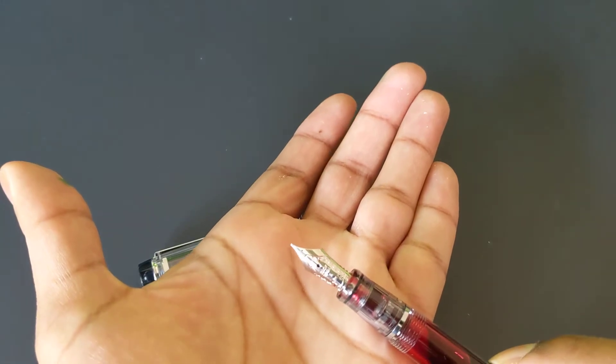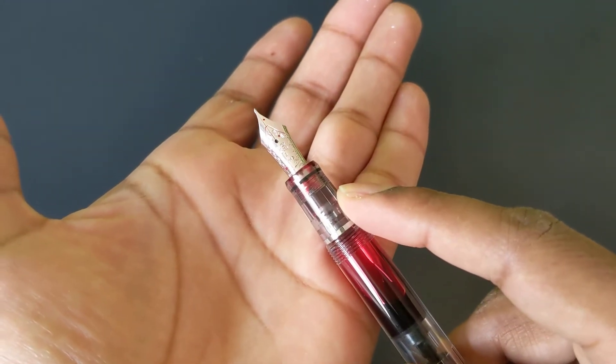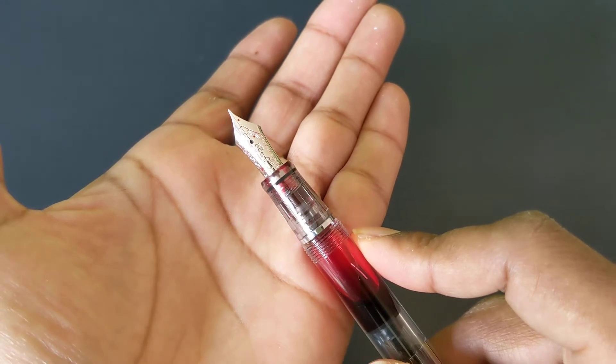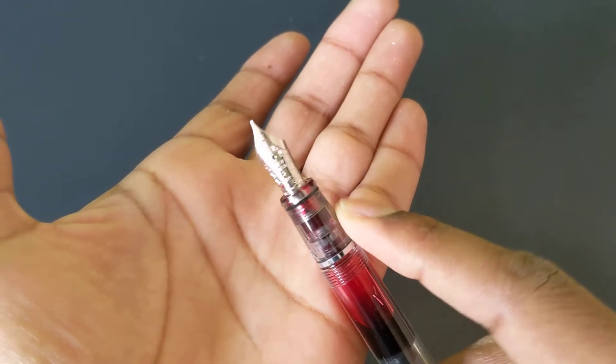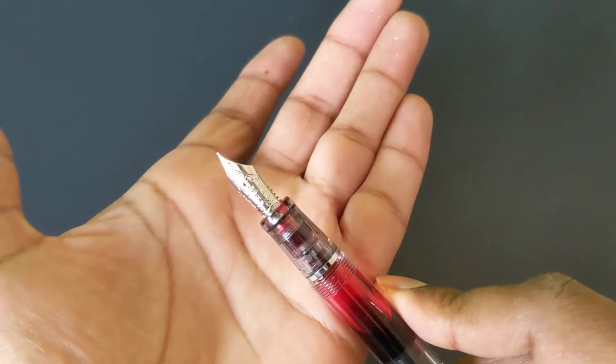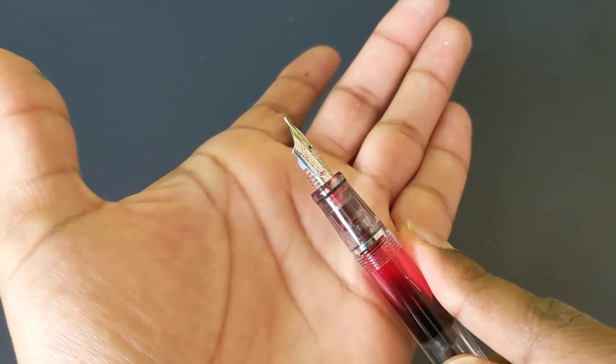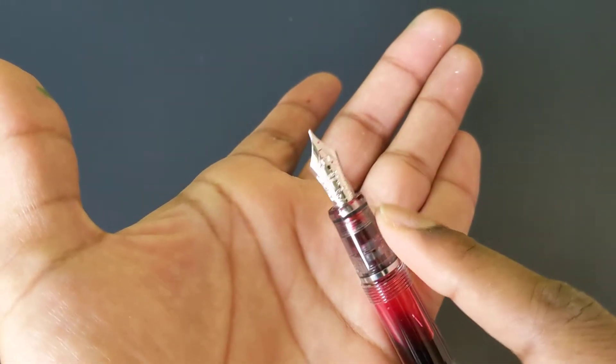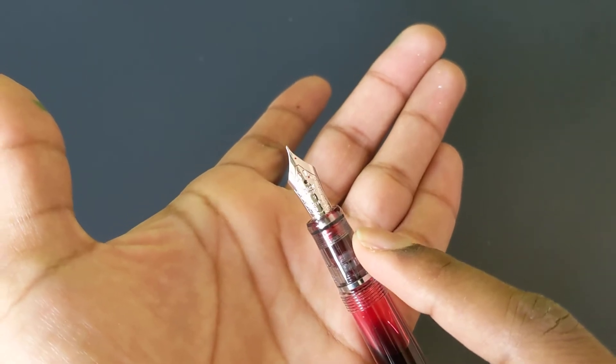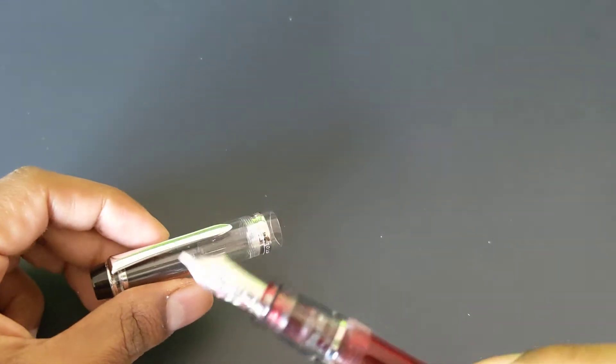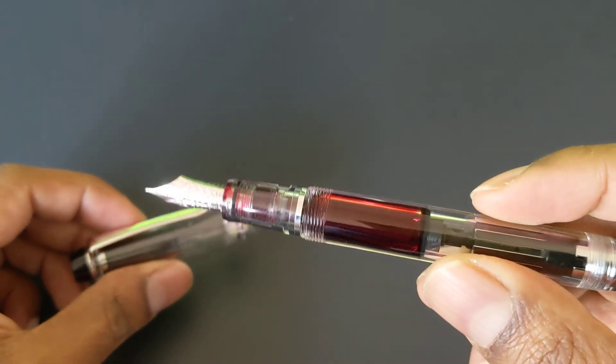You can see the section of the pen, the grip, is also see-through so you can see ink collecting. If you're the type of person where that would bother you, this might not be a great pen. It does come in other colors which are a little bit more opaque so you might not be able to see the ink, but this clear color you can definitely see it.